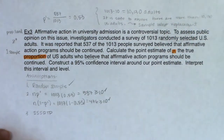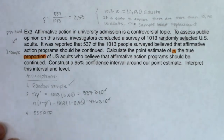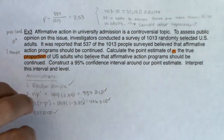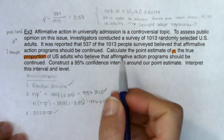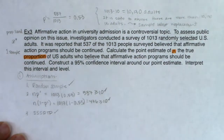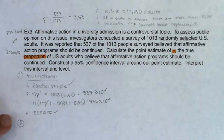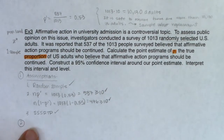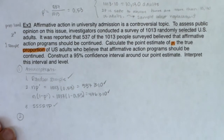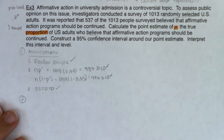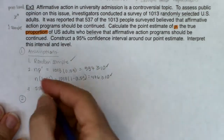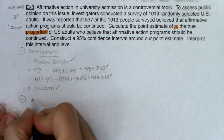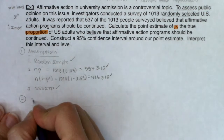All three assumptions are satisfied. The write-up for constructing a confidence interval always starts with assumptions, then a title. The title has three components: number of samples, which land you're in, and which critical value letter was used. For this problem: one sample, proportion land, z* — so the title is 'One-Sample Proportion z* Confidence Interval.'